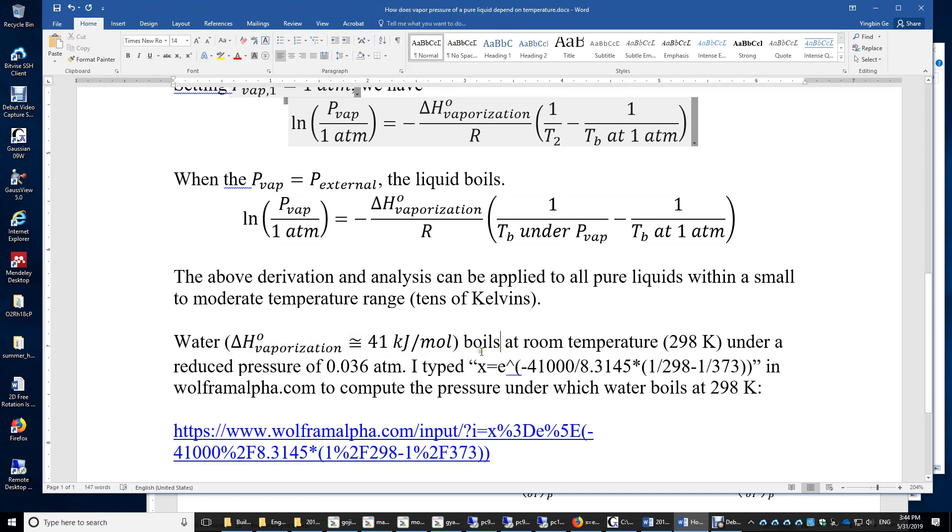Water can boil at room temperature under reduced pressure, and it's possible to compute this pressure. I simply used this equation: Pvap = e^(-ΔHvap/R × (1/T - 1/Tb)). I'm going to plug in room temperature and 373 K for the normal boiling point.